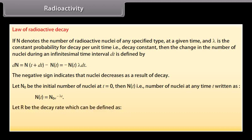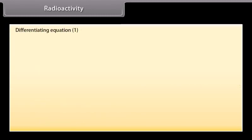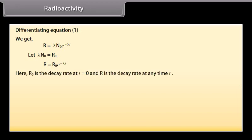Let R be the decay rate which can be defined as R is equal to minus Dn by DT. Name it as equation 1. Differentiating equation 1, we get R is equal to lambda N not E raised to the power minus lambda T. Let lambda N not equal to R not. R is equal to R not E raised to the power minus lambda T. Here R not is the decay rate at T is equal to zero, and R is the decay rate at any time T.